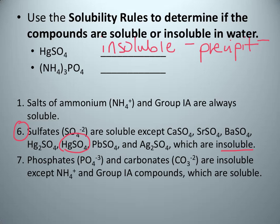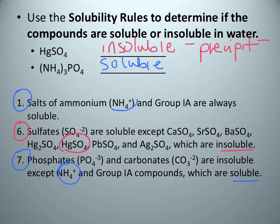Next, let's look at ammonium phosphate. Looking at the phosphate rule, number 7, it says that phosphates are insoluble except if they have ammonium in them — which this one does — making it soluble. So if this was a product in a double replacement reaction, this would not be our precipitate because it dissolves in water. We could also look at rule number 1, which deals with ammonium and group 1A elements and says they are always soluble — so still soluble for ammonium phosphate.